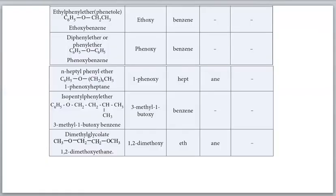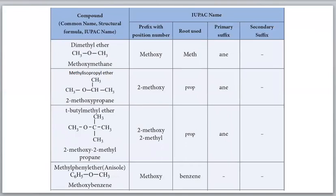For IUPAC names, the format is 'alkoxy alkane'. In an ether with two alkyl groups, the smaller alkyl group is taken as alkoxy and the larger one is named as alkane. For example: methoxy methane (dimethyl ether - same groups on both sides, so either can be alkane, and we get methoxymethane).